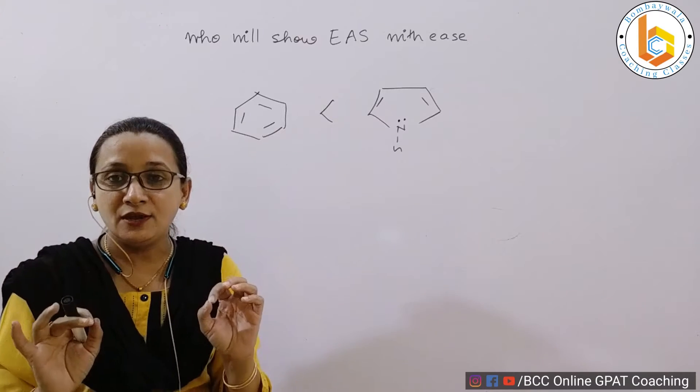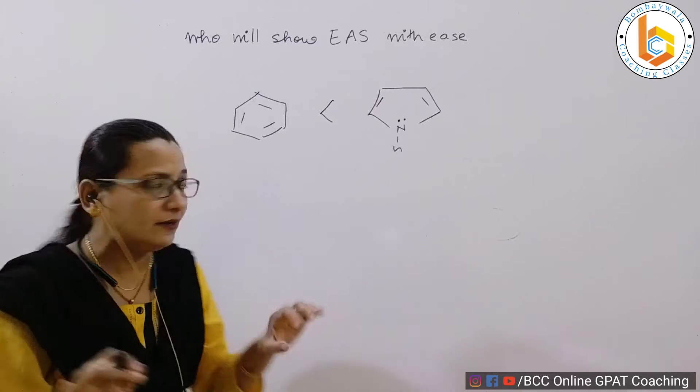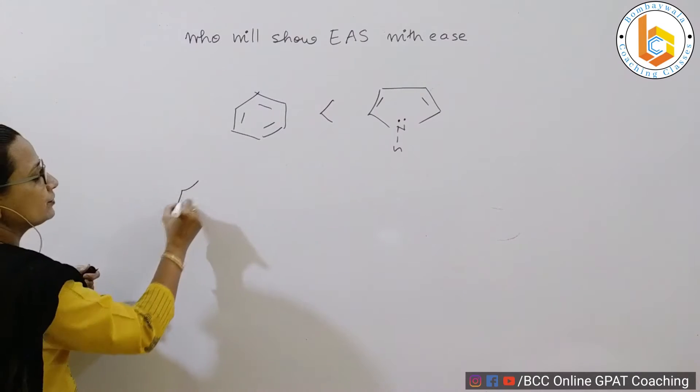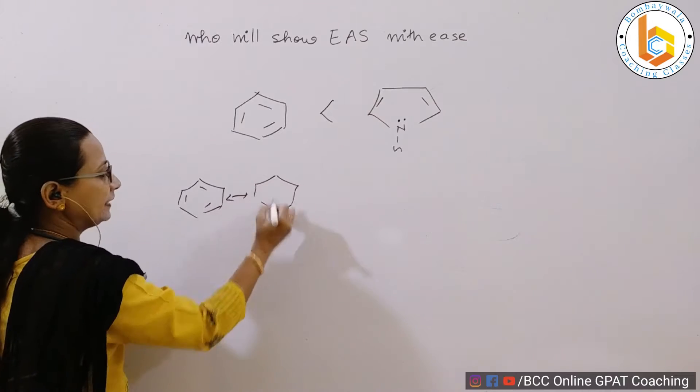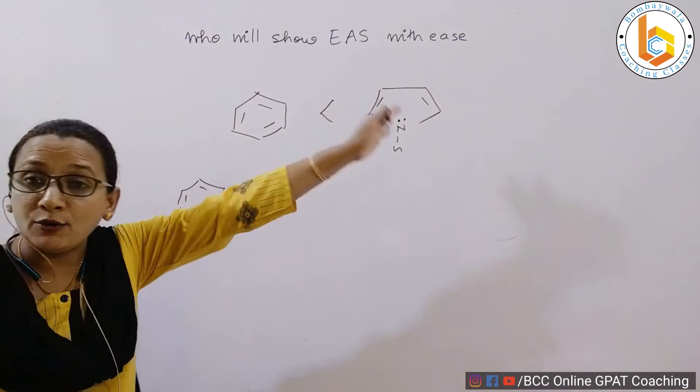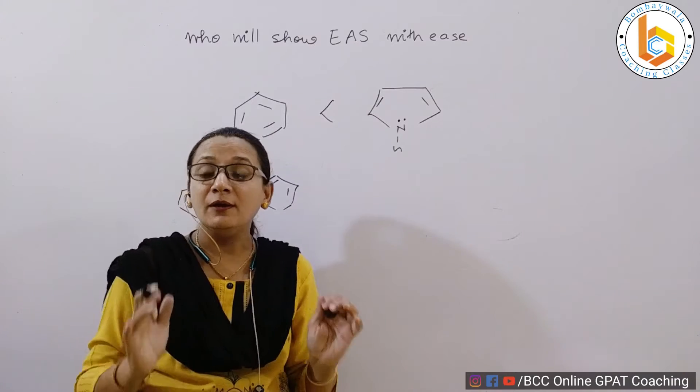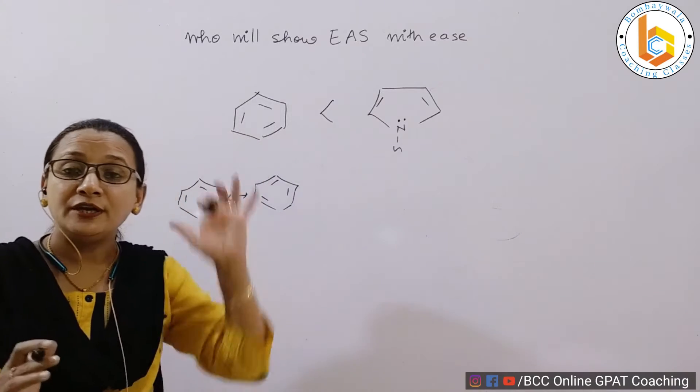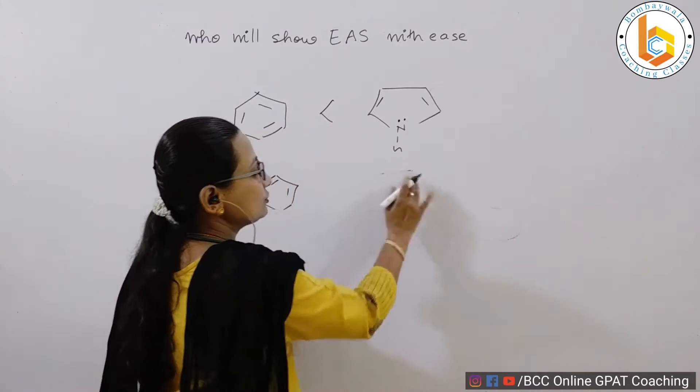I hope you remember this from my video on the resonating forms for benzene. Benzene shows how many resonating forms? It shows two resonating forms. Whereas pyrrole shows how many resonating forms? I want this answer from you all. Pyrrole shows five resonating forms. Pyrrole shows five.